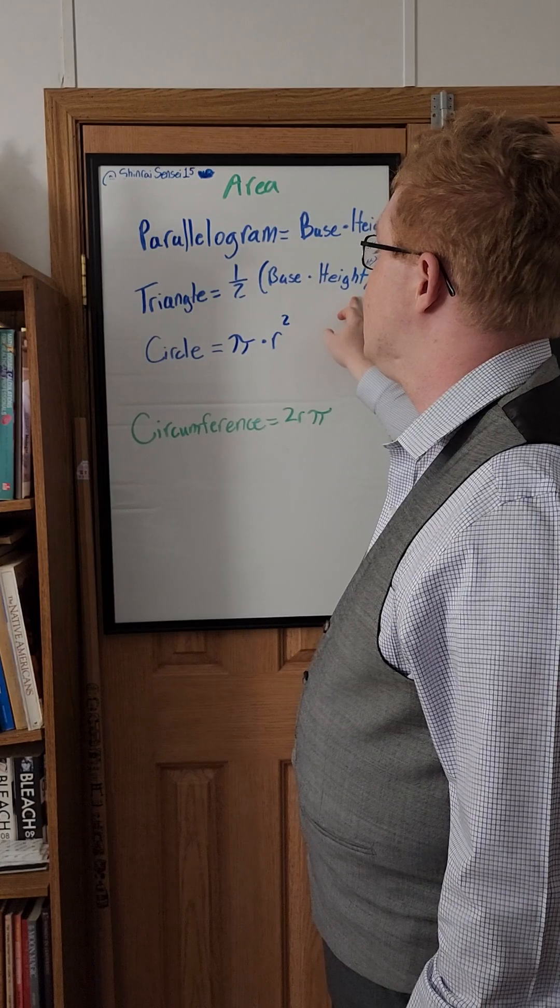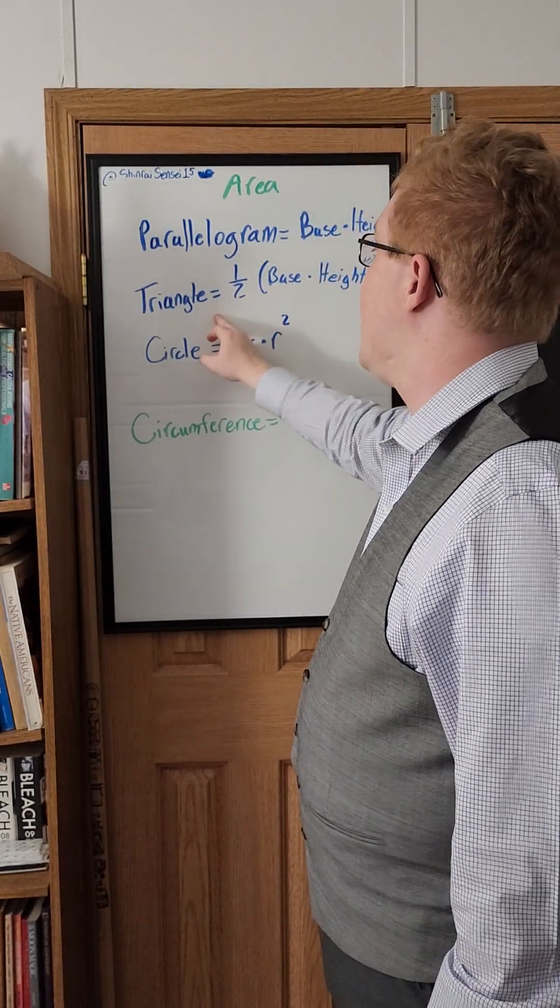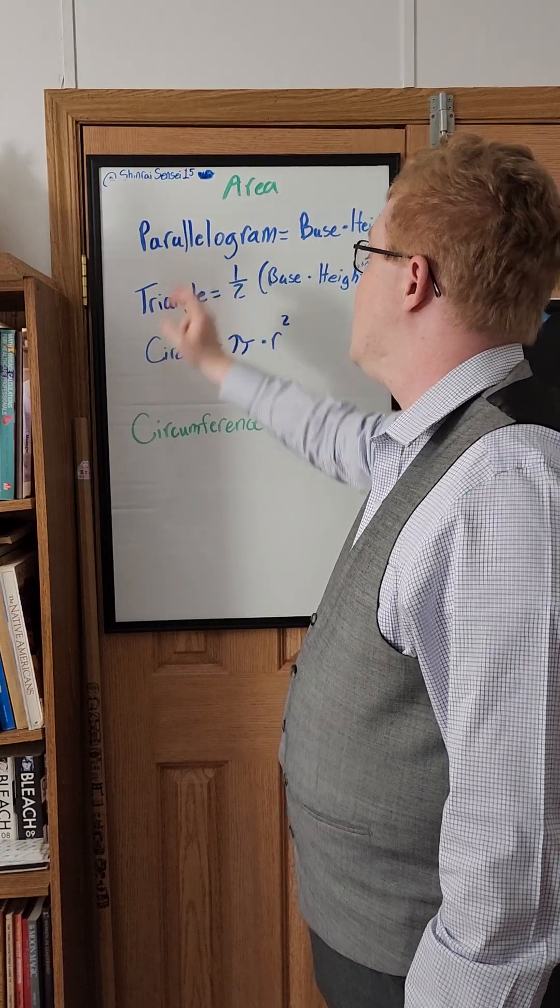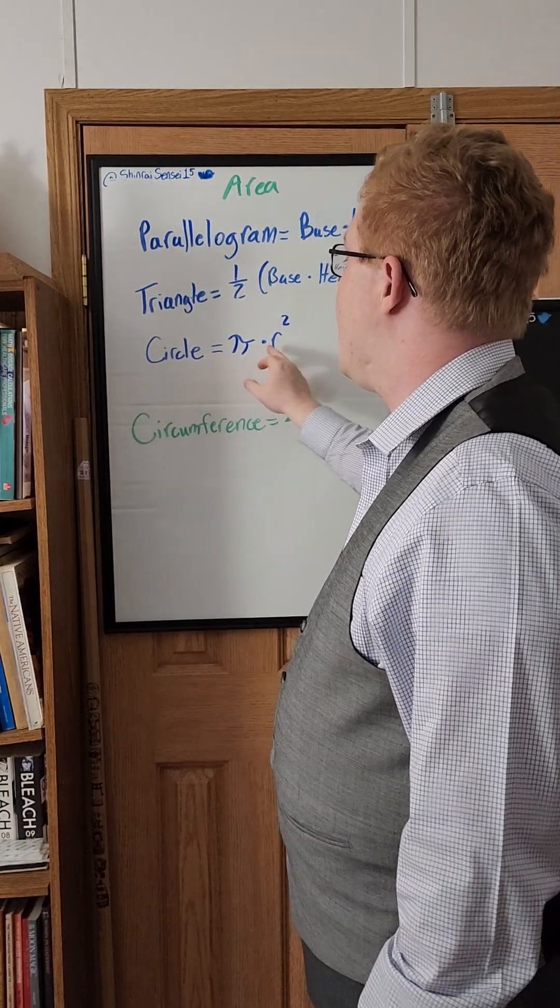Triangle is one-half base times height, so a triangle is one-half of the area of a parallelogram.